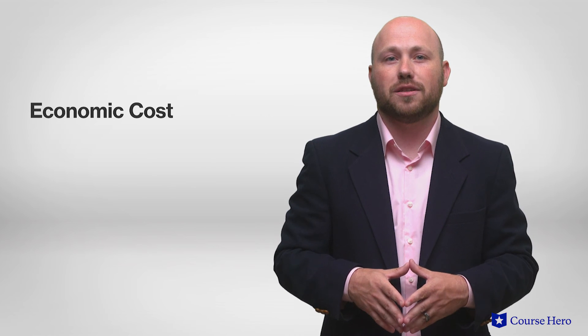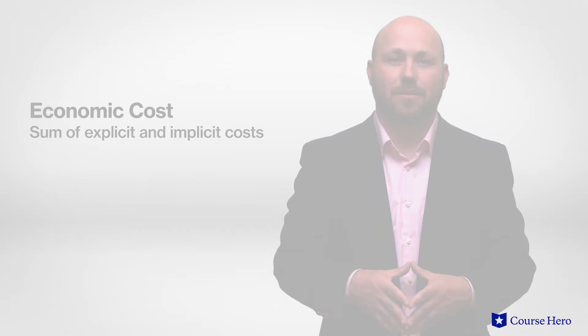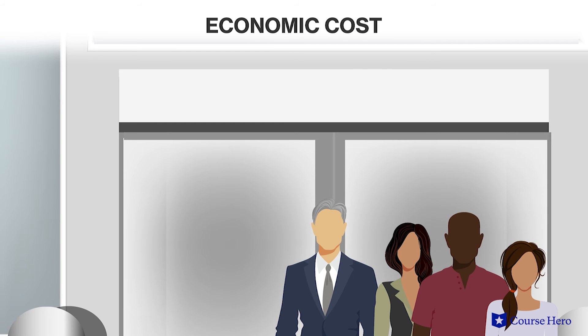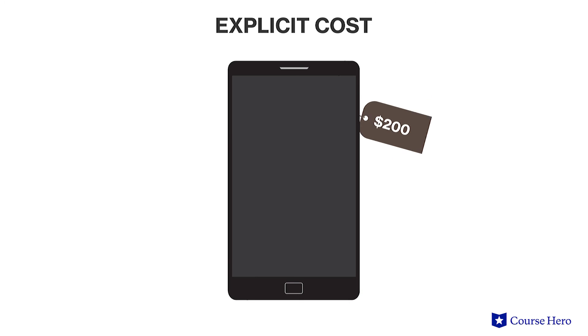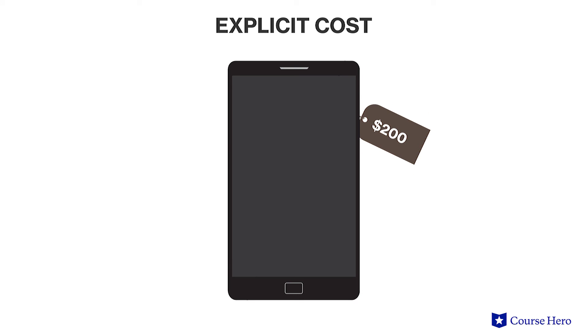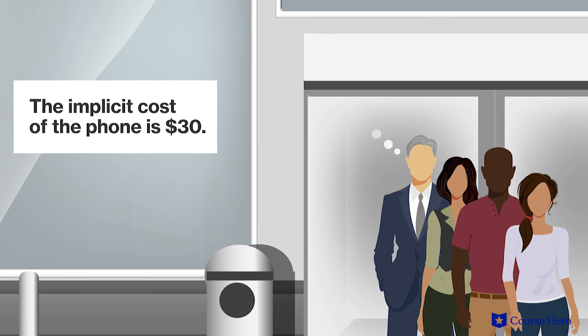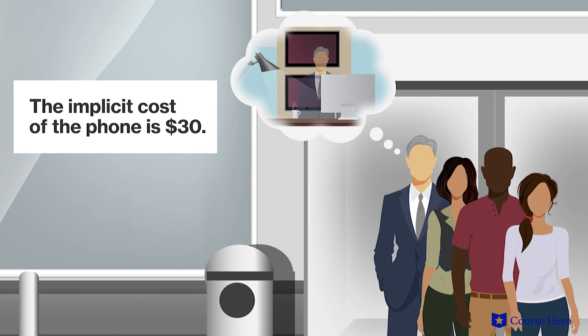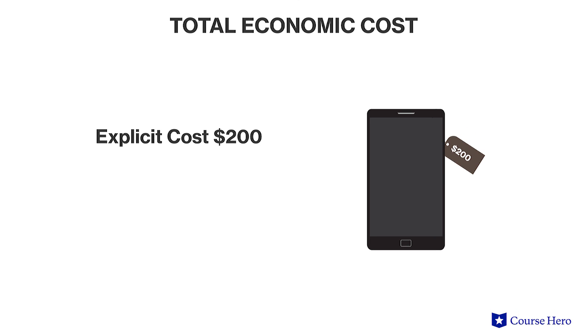Total economic costs is the sum of explicit and implicit costs. Say a person decides to leave their job for an hour to wait in line to get a new phone. The new phone costs $200, and their job pays $30 per hour. In this case, the explicit cost of the phone is $200. But the phone also has an implicit cost of $30 because they gave up $30 by not working for that hour they waited in line. The total economic cost of the phone is its explicit costs of $200 plus its implicit cost of $30, or $230.